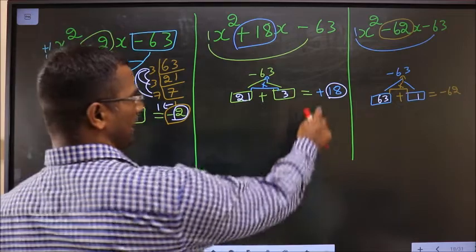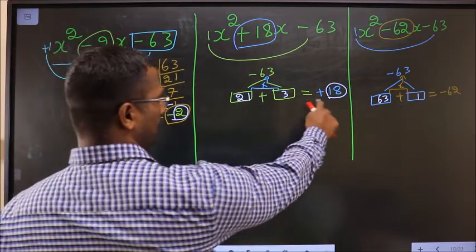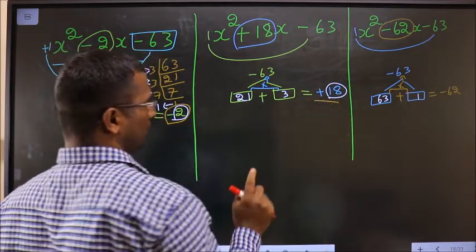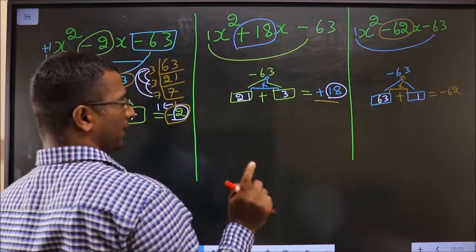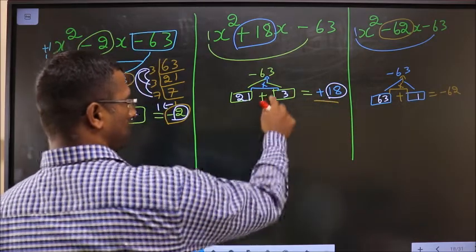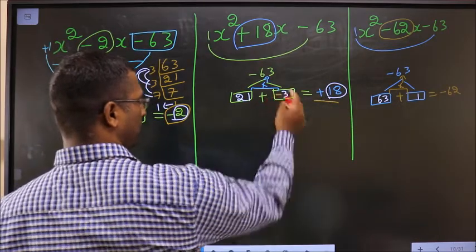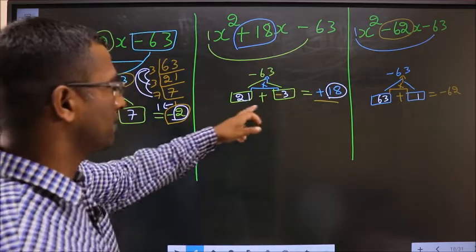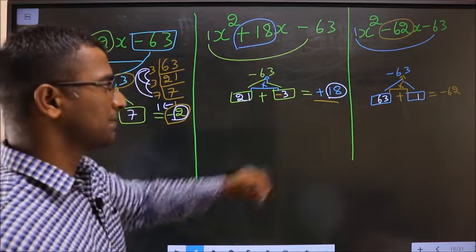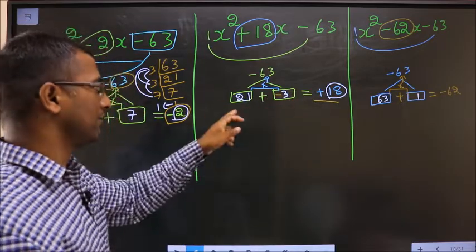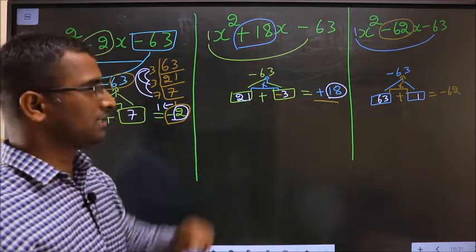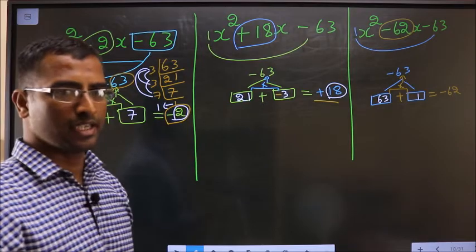For the second expression I should get plus 18. That could only happen if I place minus before 3: 21 minus 3 is plus 18, and 21 into minus 3 is minus 63.